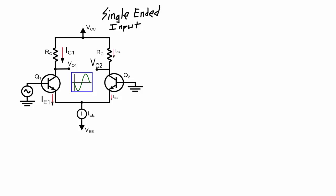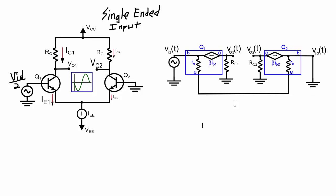The second type of input I want to look at is a single-ended input. In this case, I've got my input signal — let's label it VID over 2 — applied to Q1, and Q2 is grounded. To figure out the gain of this circuit, what's the relationship between VO1 and the input and VO2 and the input, we need to convert this schematic into the AC model: short the DC voltage sources, open the DC current sources, and convert the two transistors into their AC model.